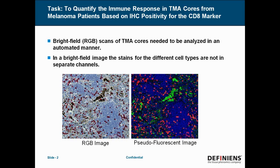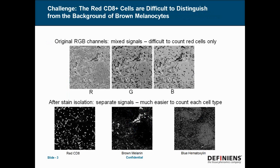Now in a brightfield image, the chromogenic stains for the different cell types are not in separate channels the way they would be in a fluorescent image, and this is shown down at the bottom of your screen. On the left-hand side, we have the brightfield image which is made up of red, green, and blue channels. And on the right, we have a computer-generated pseudo-fluorescent image which is sort of our end goal in this project. The challenge is that the red CD8 positive cells are difficult to distinguish from a background of brown melanocytes, because this is skin samples.